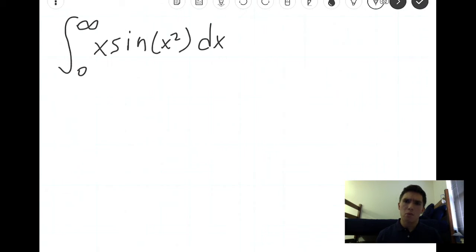An improper integral is defined as a definite integral in which one or both of the endpoints increase or decrease without bound. In other words, if one of the endpoints is infinity or negative infinity, it's an improper integral. And in this case we're evaluating the integral on the interval from 0 to infinity, thus it is an improper integral.